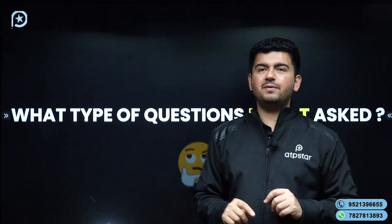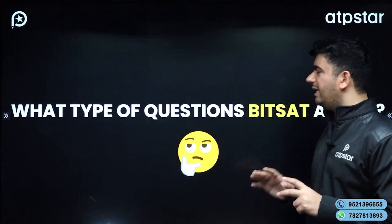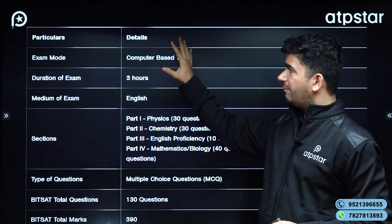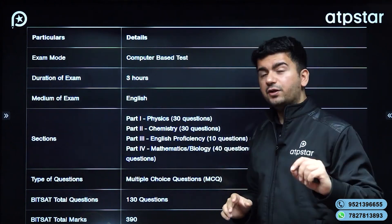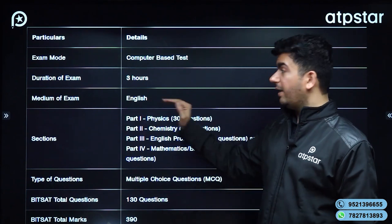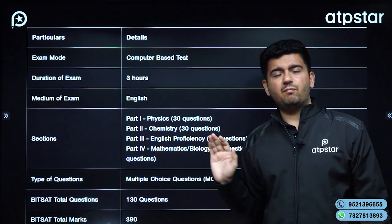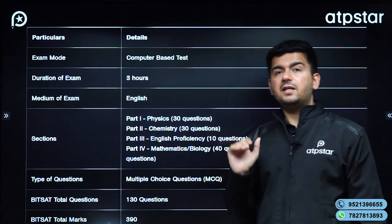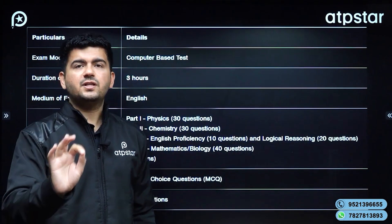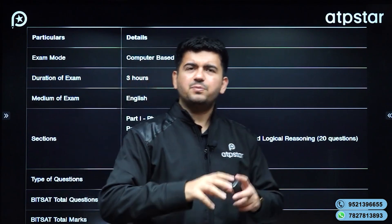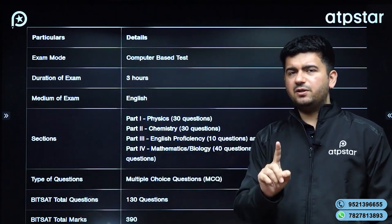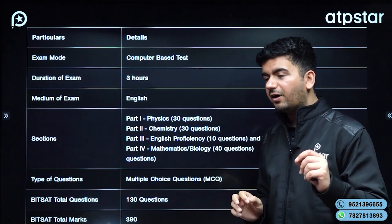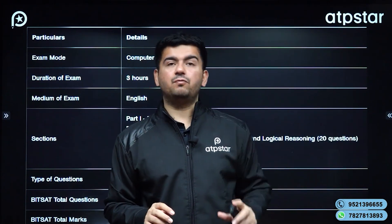Let us see what type of questions are mainly asked in BITSAT. Some basic things you must know: BITSAT is a computer-based test. The duration of the exam is 3 hours, very similar to IIT JEE. But an important difference is that mathematics has more weightage — there are 4 parts in the exam in which mathematics has 40 questions and physics and chemistry have 30 questions each. All questions are single correct — you have to select one option. You will get plus 3 for a correct answer, and if you get the wrong answer, there will be negative marking — minus 1.